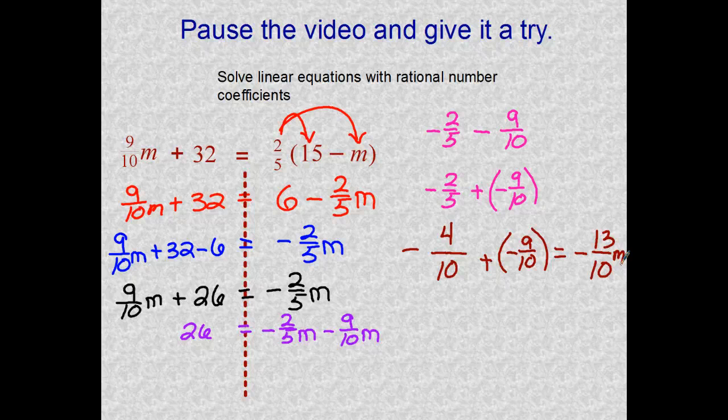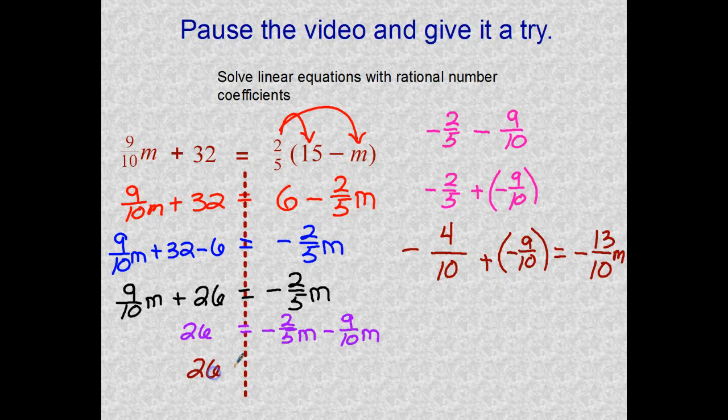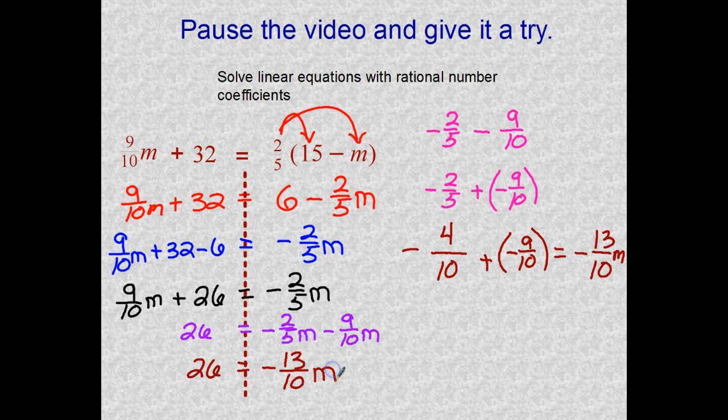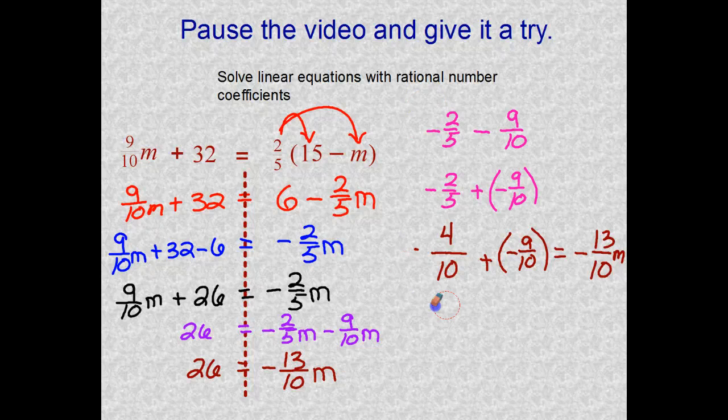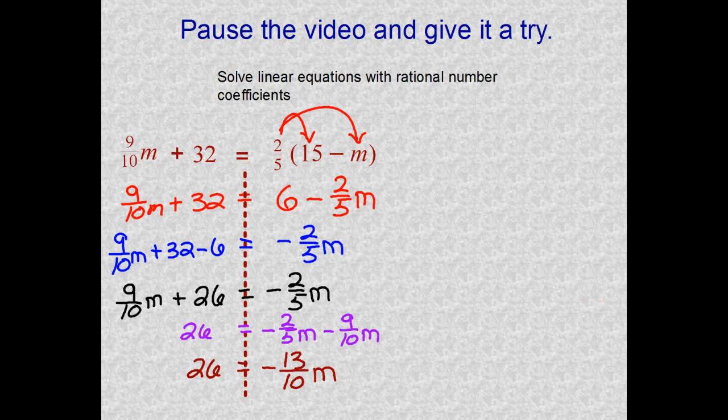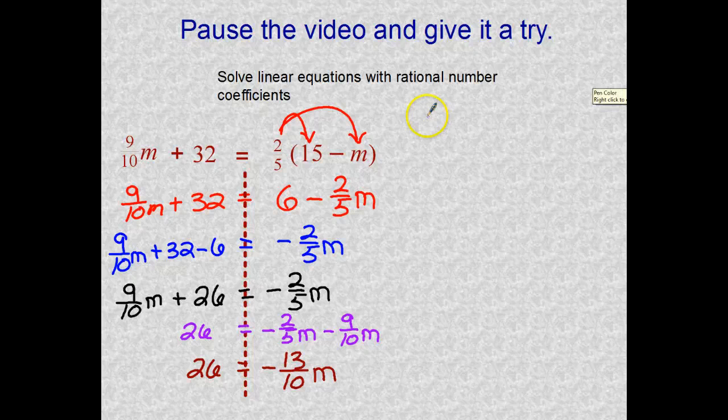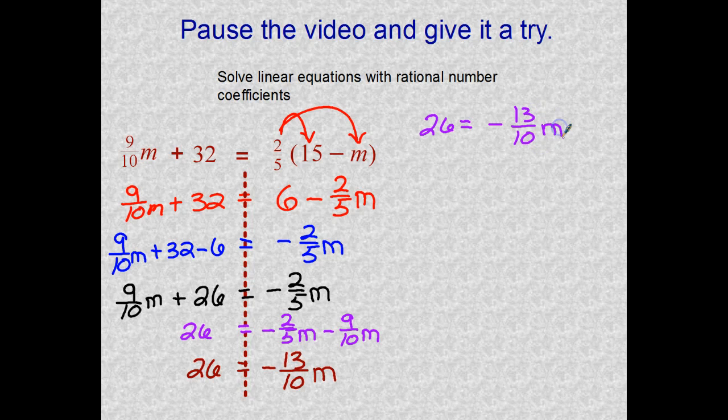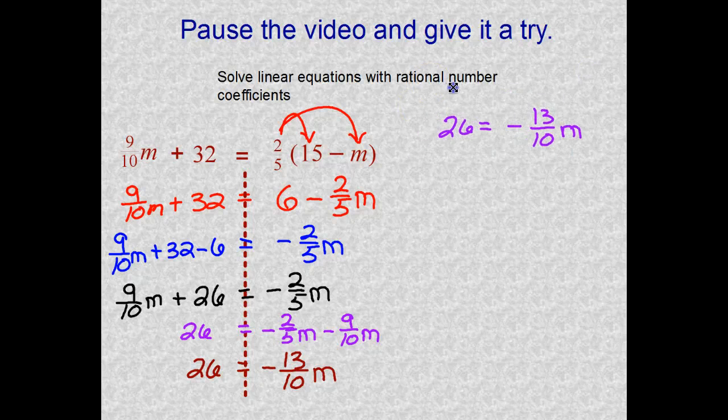Let's write all that out down here. 26 is equal to—we said negative the improper fraction of 13 tenths M. Still need to solve for M. It's a long problem. Let's get rid of all this and carry that up. Let's carry all that up here: 26 equals negative 13 tenths M.